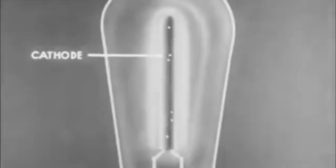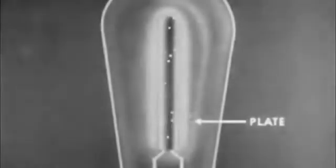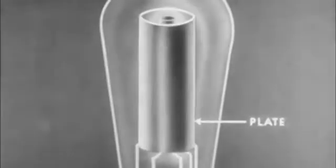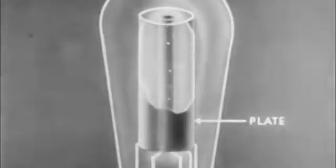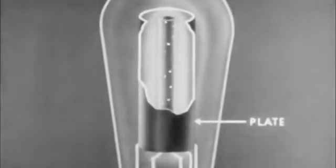The heated cathode, with its swarm of electrons, is surrounded by a larger tube element called the plate. These two parts, the cathode and the plate, are the principal elements of the diode tube. All tubes contain these two essential elements.